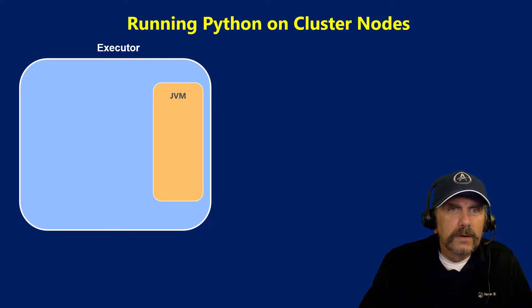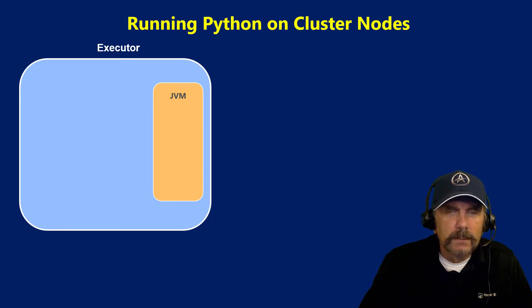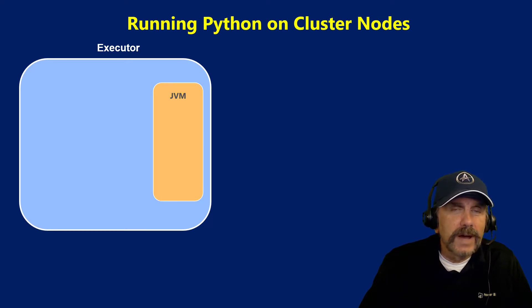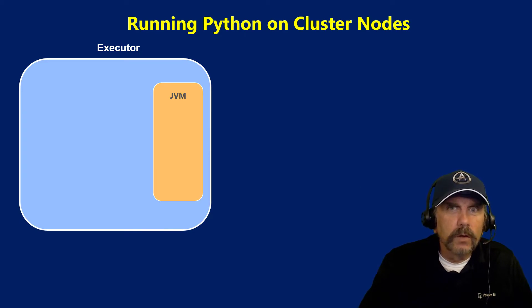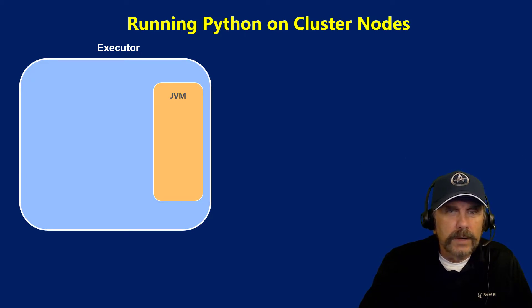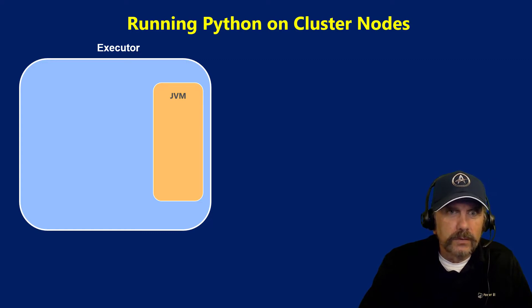As you can see in this diagram, we have an executor, and inside you see a JVM, which stands for Java Virtual Machine. Since Spark is written in Scala, and Scala is built upon Java, it's not surprising that it uses a JVM at the root of all the work. In fact, it ultimately converts all of the data, whatever it is, into resilient distributed data sets, RDDs, and processes those in the JVM.